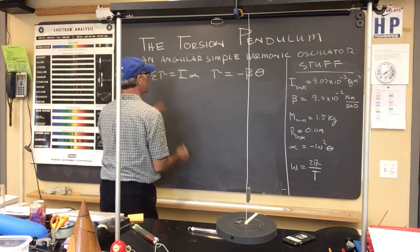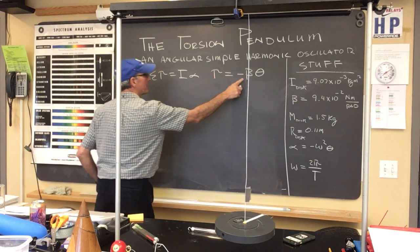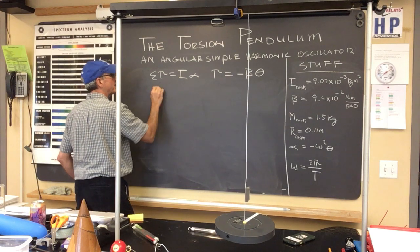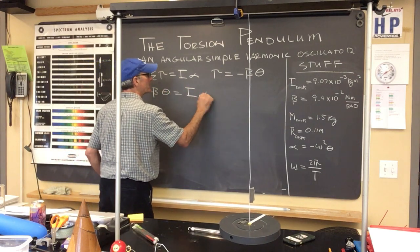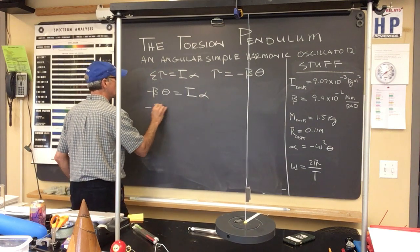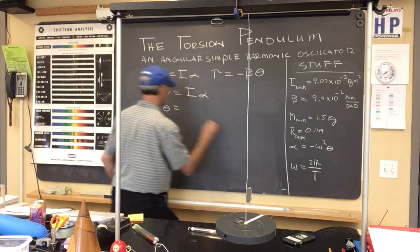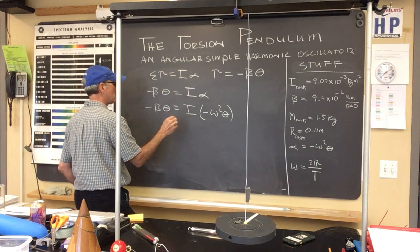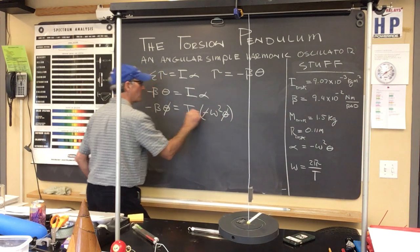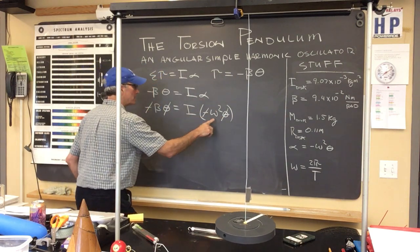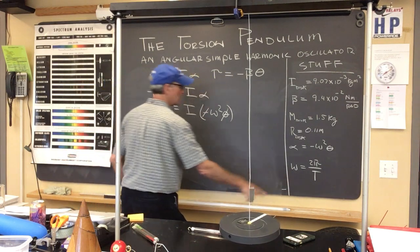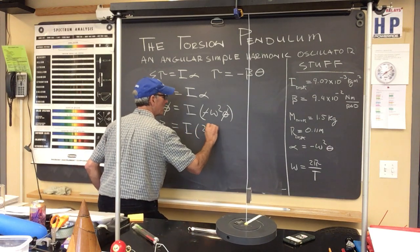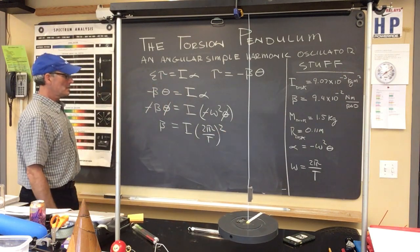Manipulating these two expressions, we substitute minus beta theta for the torque expression — we're only using one torque — giving minus beta theta equals I-alpha. Now substituting alpha equals minus omega squared theta, it looks like we can make some cancellations: theta cancels as well as the negative sign. Then substituting the angular frequency 2 pi over the period for omega, we get beta equals I times the quantity 2 pi over T, squared.